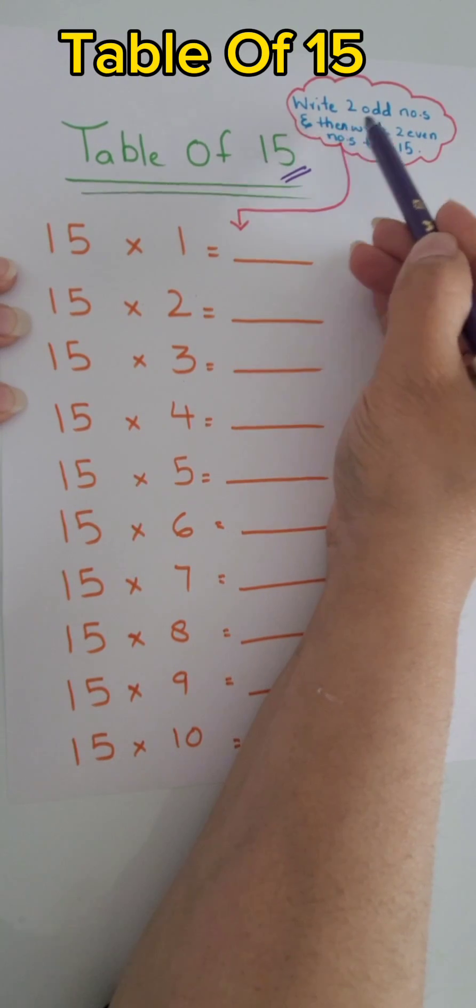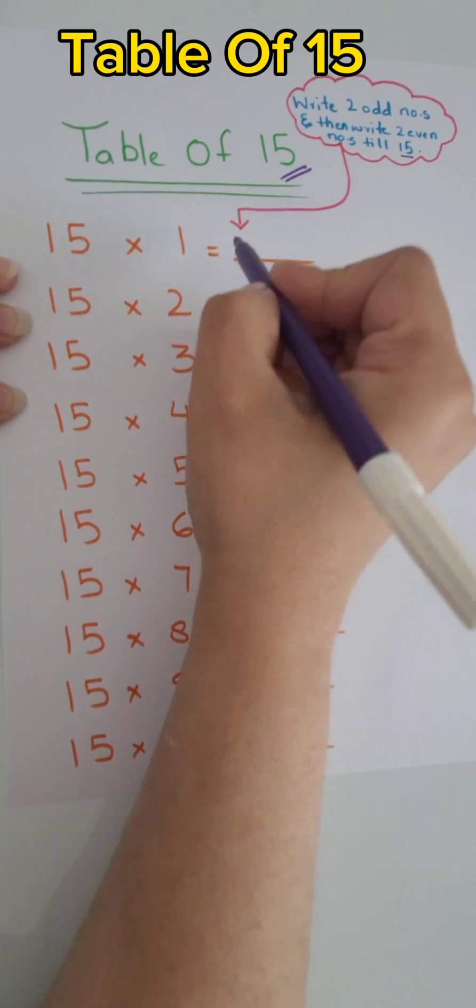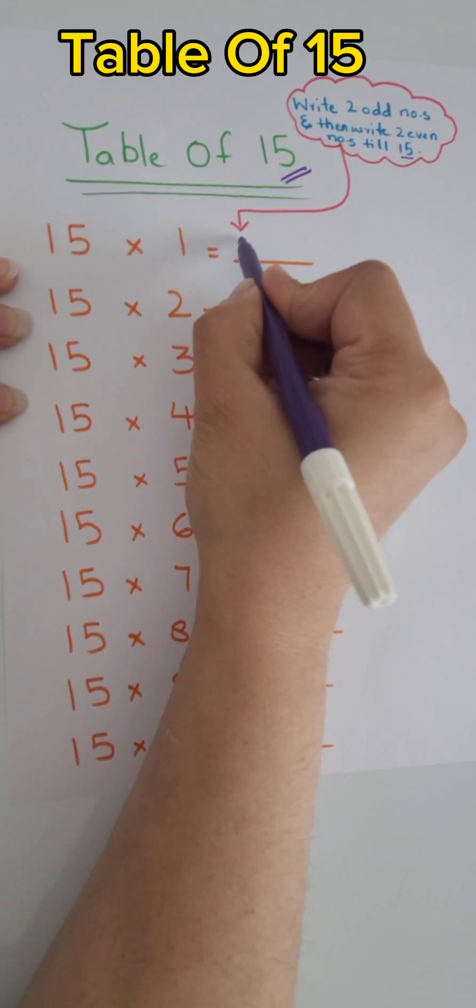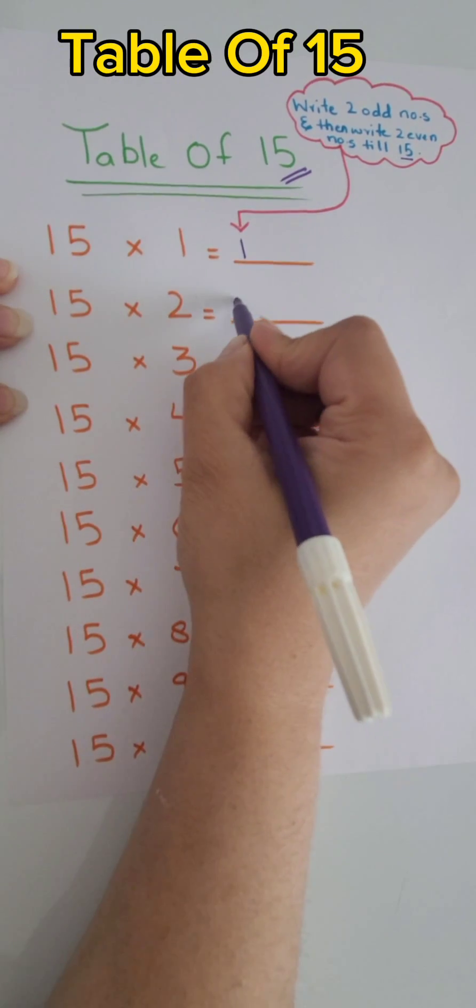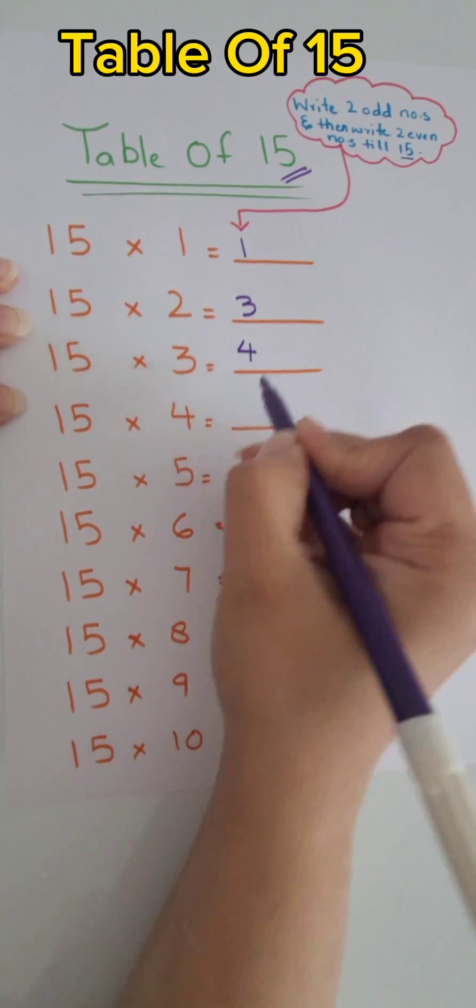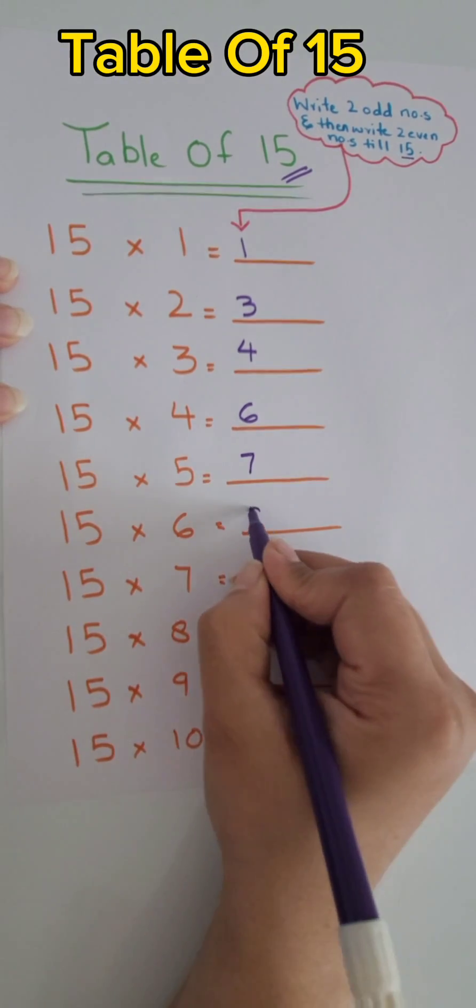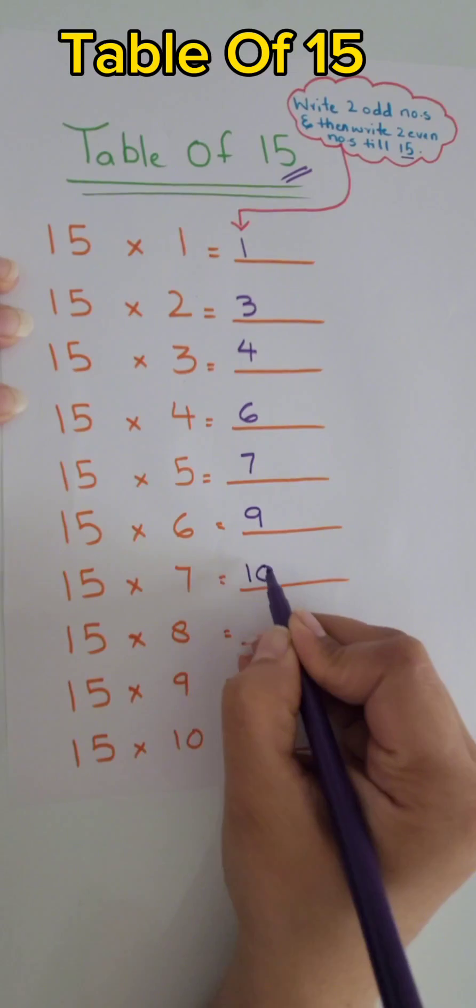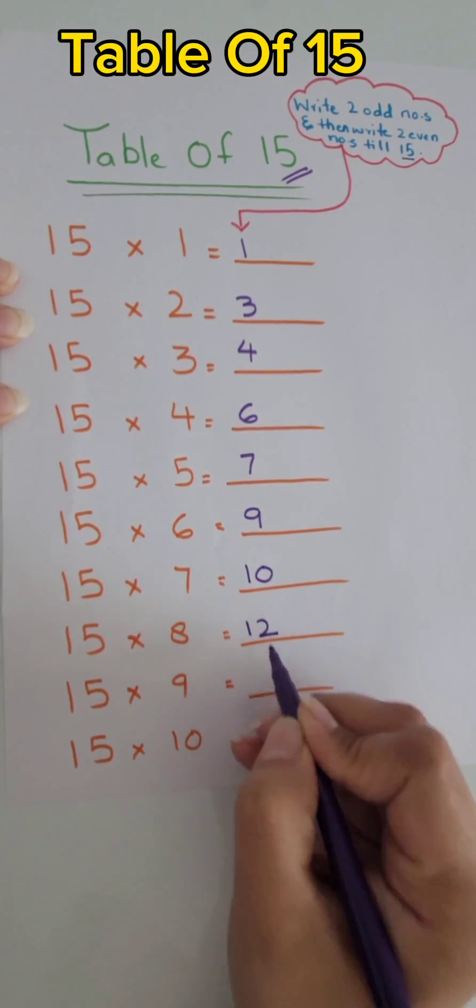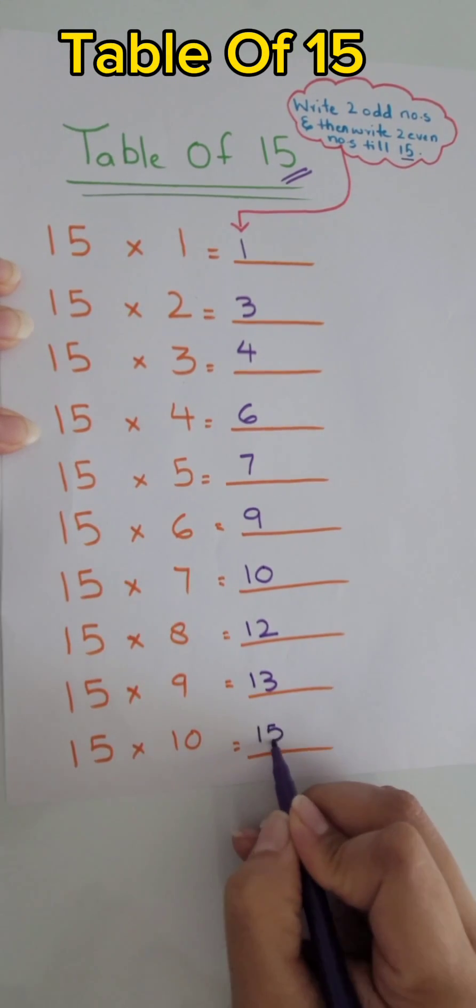Write two odd numbers and then write the next two even numbers until 15. So we're going to start from the odd number 1, then 3. Now our even numbers, 4 and 6. Now here we are with the odd numbers once again, 7 and 9. Right after that, even numbers 10 and 12. And lastly, odd numbers 13 and 15.